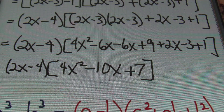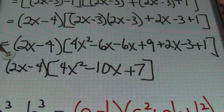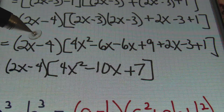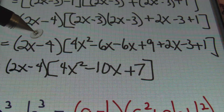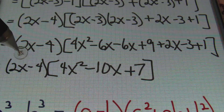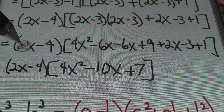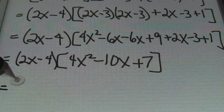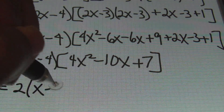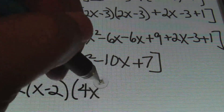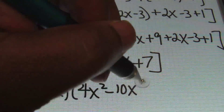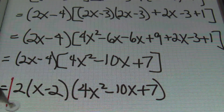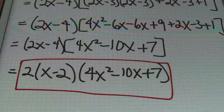The next thing we need to do is factor out this 2. When factoring completely, you don't want to leave any quantities that have things in common. This binomial 2x minus 4 has 2 in common, so I'll factor out a 2. That gives me 2 times x minus 2, times the quantity of 4x squared minus 10x plus 7. And this is my answer. That's our answer for number 6, and that wraps up this session on Difference of Cubes.